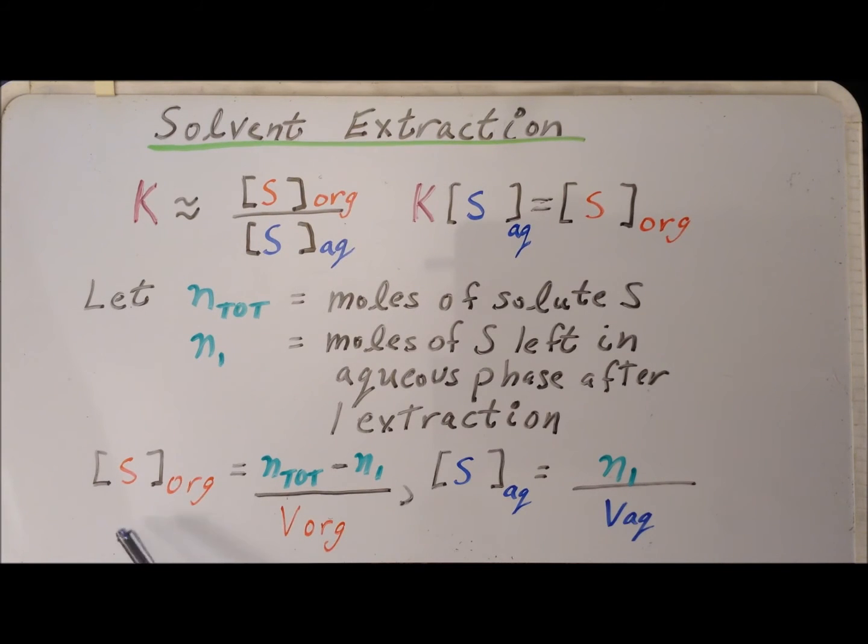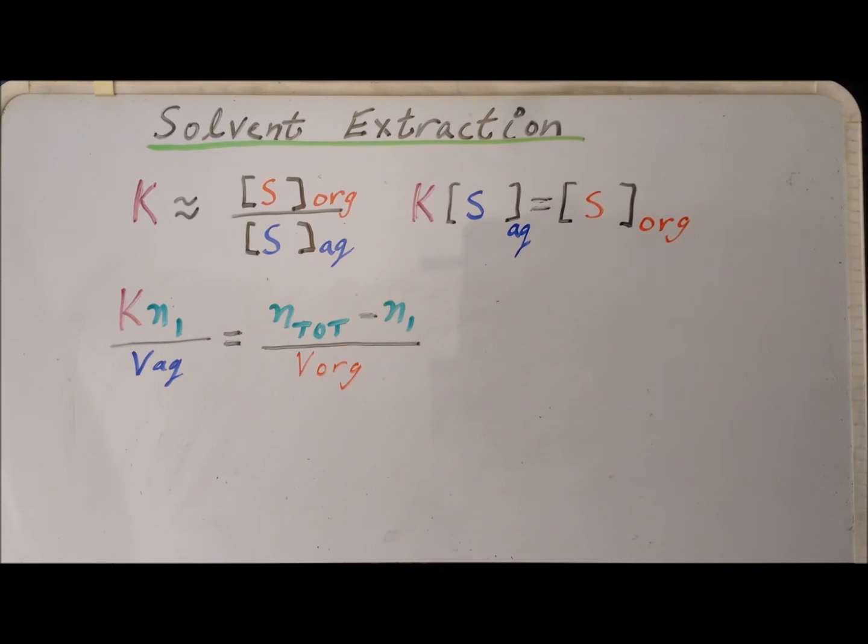Our next step is to take these two expressions for the concentration of S in the two different phases, and to substitute them into this particular equation. So substituting into this equation, we get that K times N_1 divided by V_aq is equal to N_tot minus N_1 divided by V_org, the volume in the organic phase.